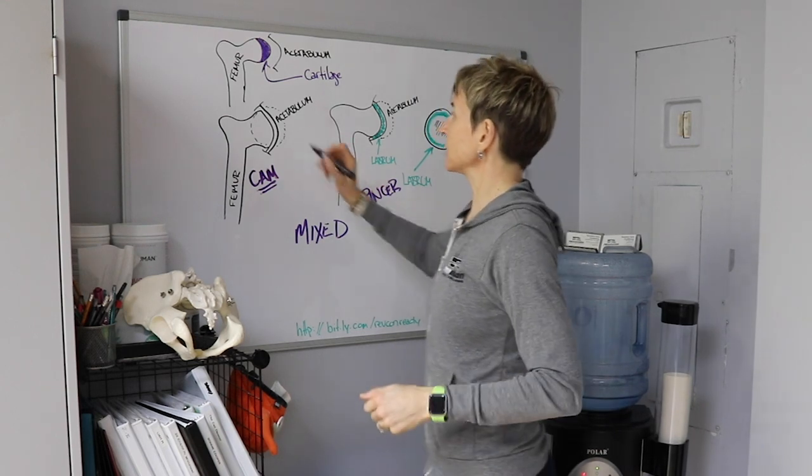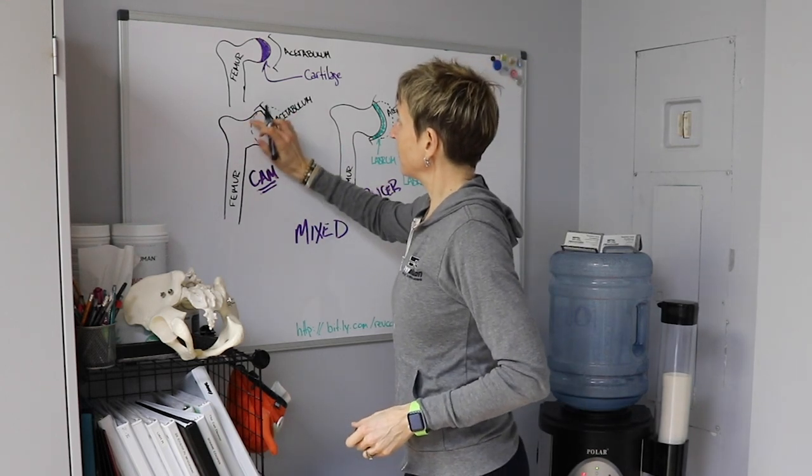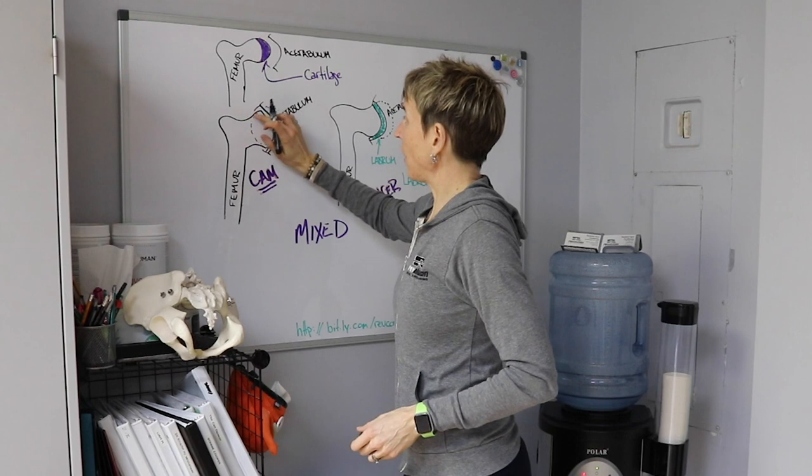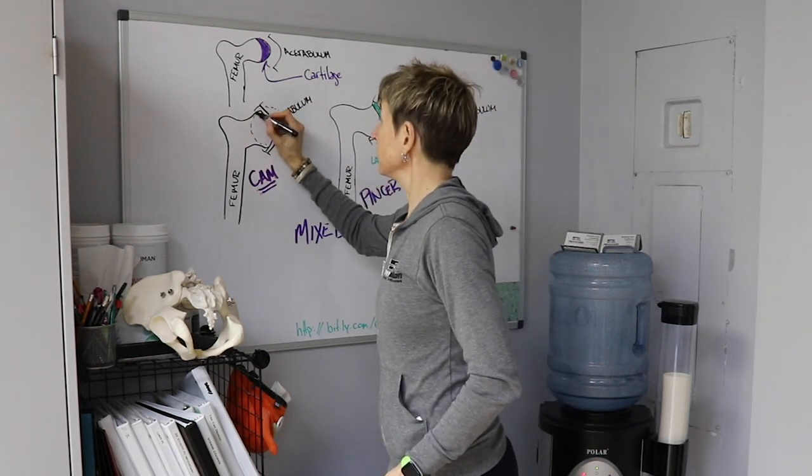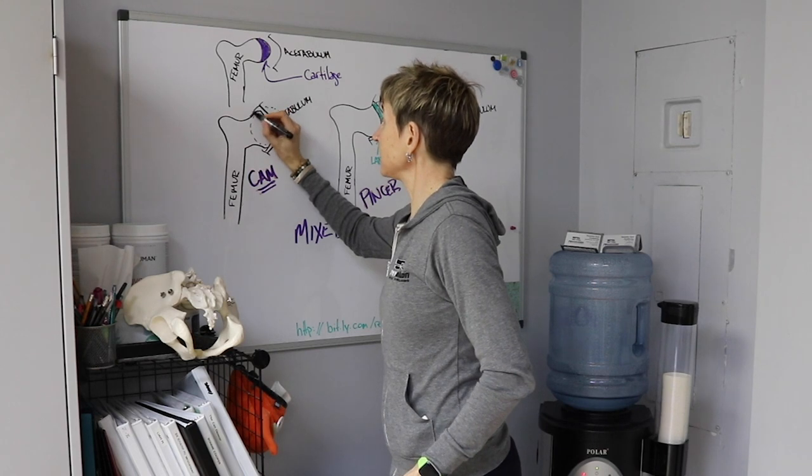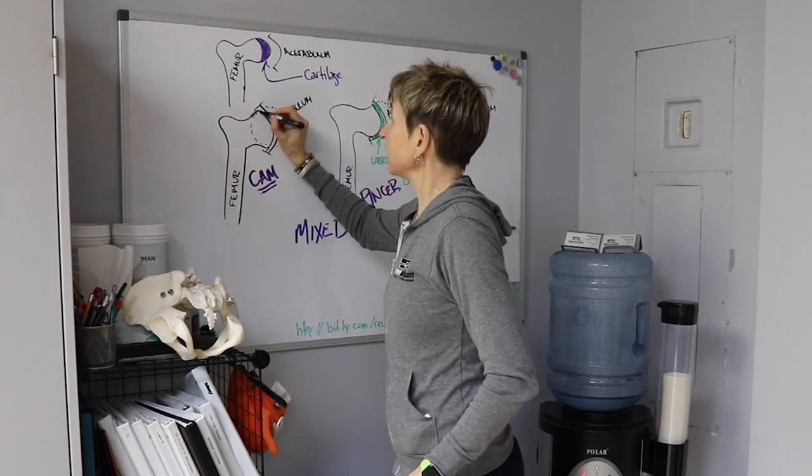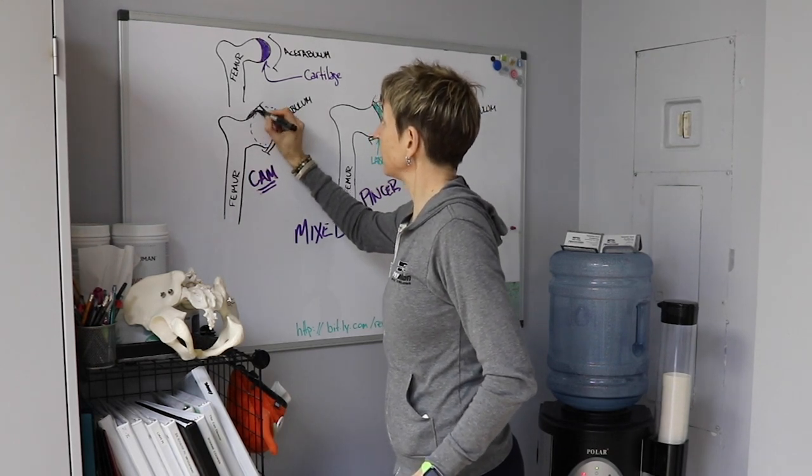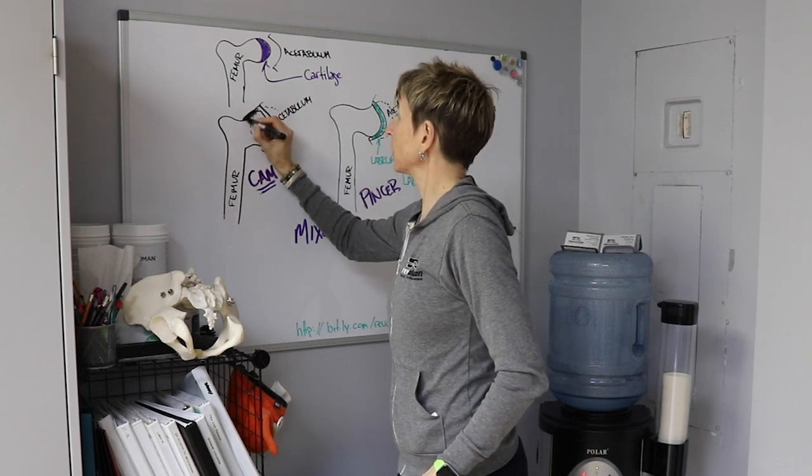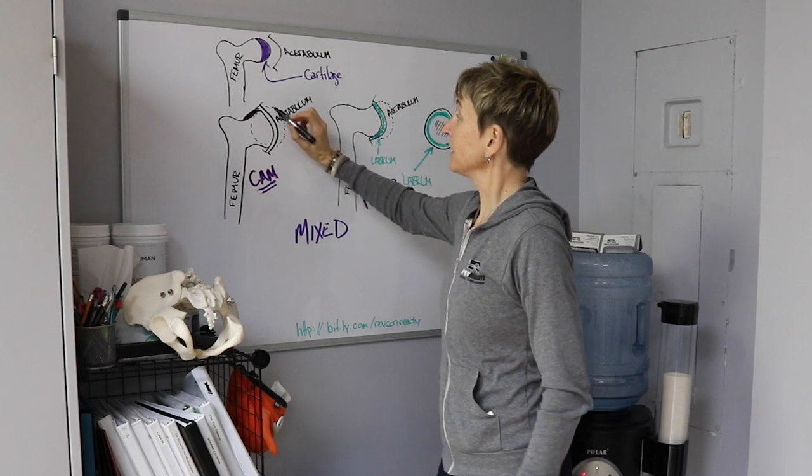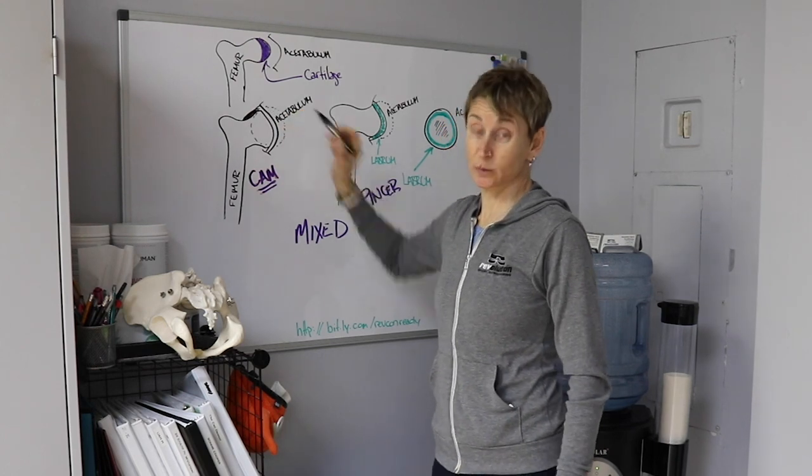And so if this part of the ball sort of rubs on the lip of the socket, by nature and how our body adapts, it sort of builds up a bony callus. And it builds up more of a bony callus and more of a bony callus over time. So it creates less space.